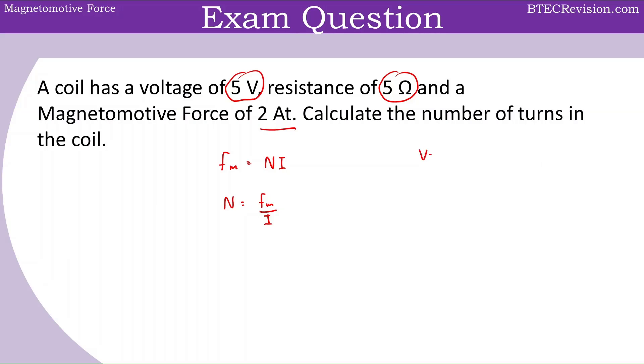That would be V equals IR. If you rearrange this for I, that would give us voltage divided by resistance, which is 5 divided by 5 which is 1. Therefore we have 2 for the magnetomotive force divided by a current which is 1, and this gives us the value of 2.